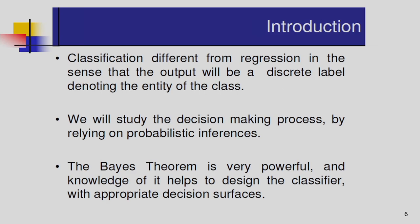In my previous classes I discussed the concept of regression — regression means the fitting of a line between the sample points. But classification is different from regression because the output will be a discrete level denoting the identity of the class, such as class omega 1 or class omega 2. In regression, we consider the fitting of a line or curve between the sample points. Mainly we are considering probabilistic inference — probabilistic theory for decision making — and the Bayes theorem is the powerful tool for decision making.